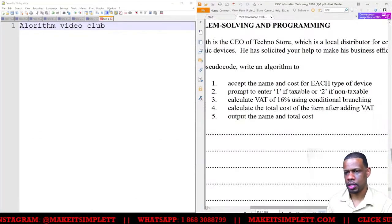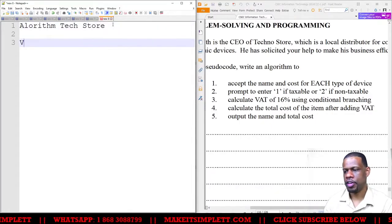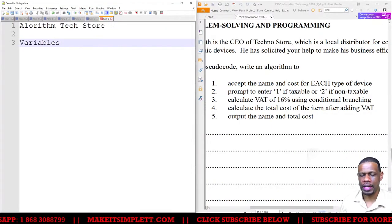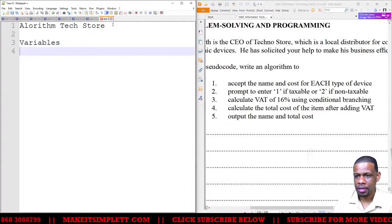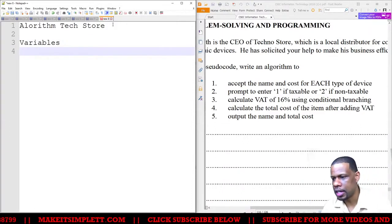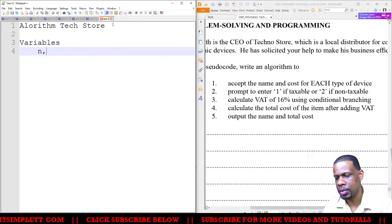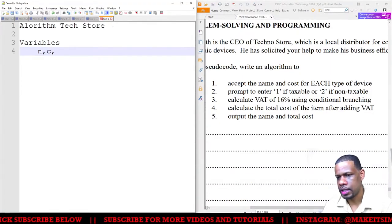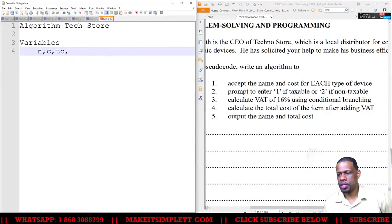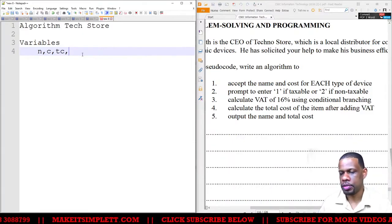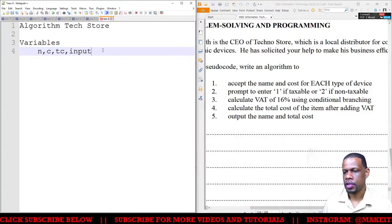We want to accept the name and cost. We'll start by giving it a name: Algorithm Tech Store. Variables - normally I would go through the algorithm and then as I get the variables I'll add them back in, but we can see that we need to get variables already. Accept the name and cost for each type of device, so we want to get n for name and c for cost. We want to calculate total cost and prompt the user to enter 1 if taxable or 2 if non-taxable, so we have to get an input, i for input.